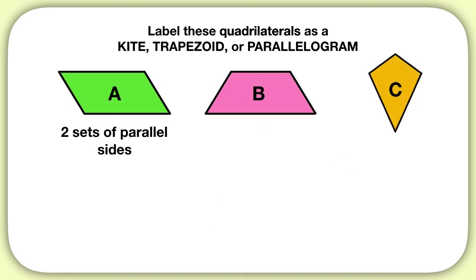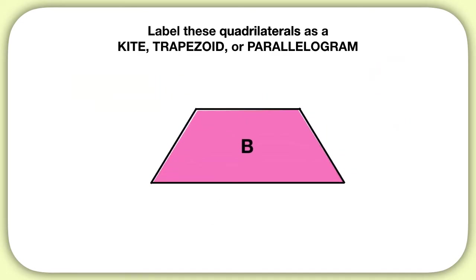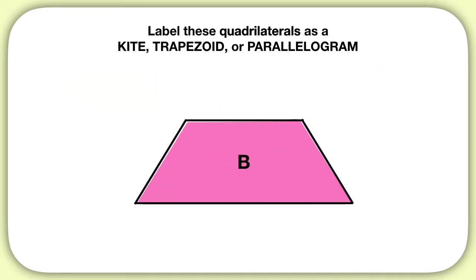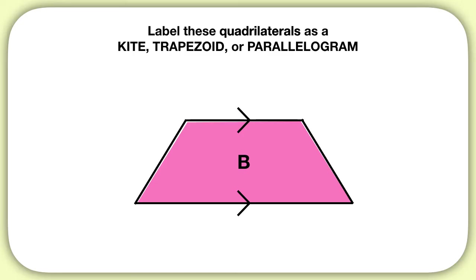But what about shape B? Shape B — we can see the top and bottom sides are moving in the exact same direction, they're parallel, but there are no other parallel sides. So shape B has one set of parallel sides.